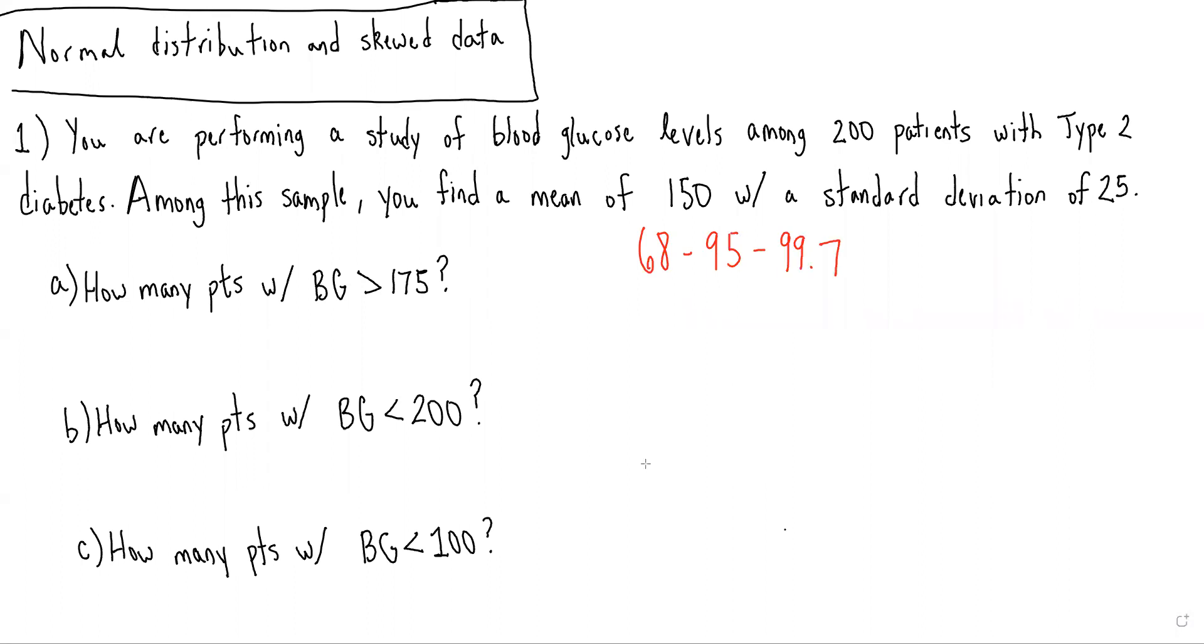And if we were to quickly draw a normal distribution, we would find that we have a mean value of 150.